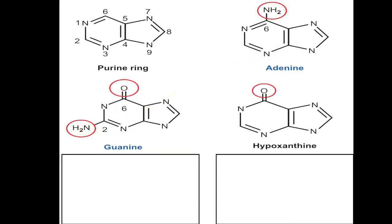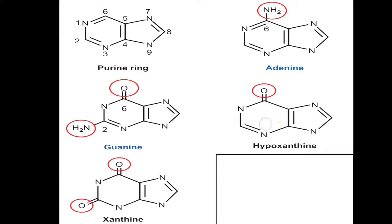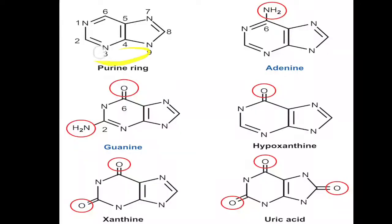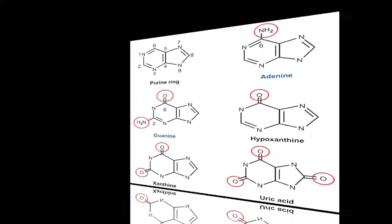When purines are metabolized, intermediates are generated: hypoxanthine (6-oxopurine), then xanthine (2,6-dioxopurine), and finally uric acid (2,6,8-trioxypurine) as the end product. In exams, if hypoxanthine is named, you must identify it as containing a purine ring structure. You have to remember that hypoxanthine, xanthine, and uric acid all contain the purine ring structure.